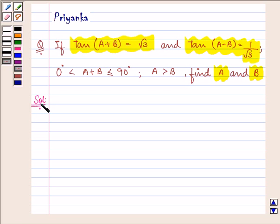Let us rewrite whatever is given to us in the question. Before that, we should be well versed that the value of tan 60° = √3 and the value of tan 30° = 1/√3.